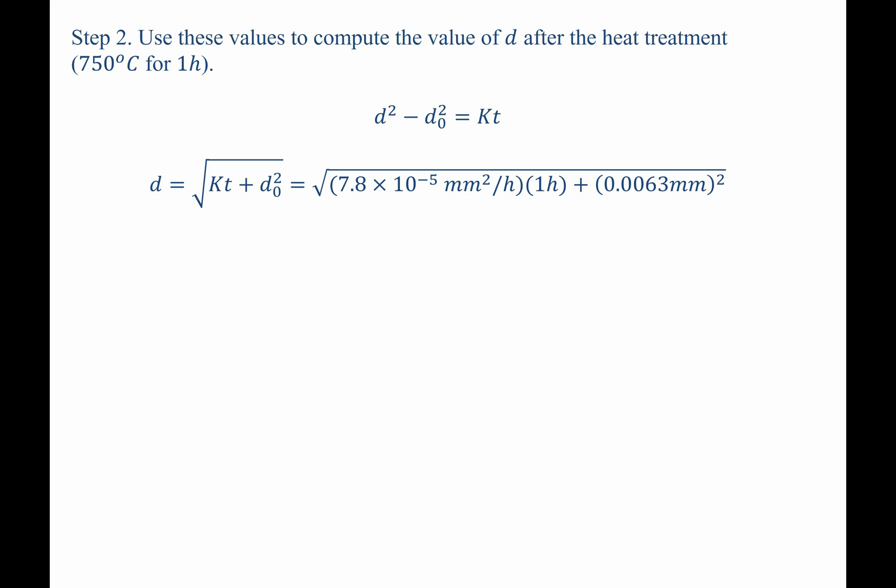d should be equal to the square root of Kt plus d-naught squared. Plugging in the values from before, we see that we are given the following expression. Punching that into our calculator, we find that our grain size is 0.01086 millimeters.